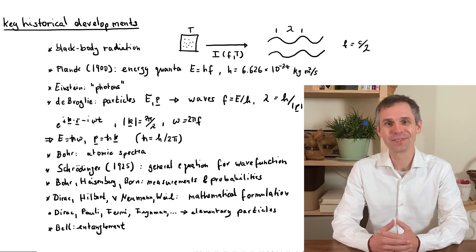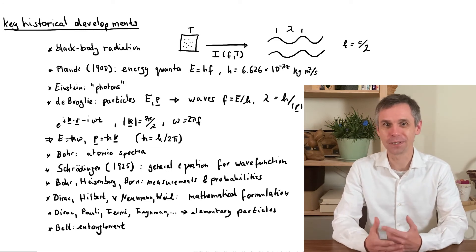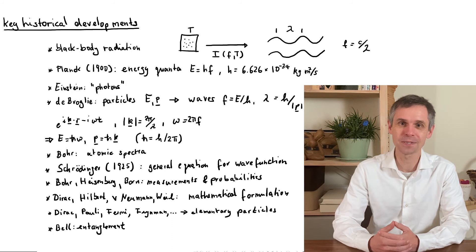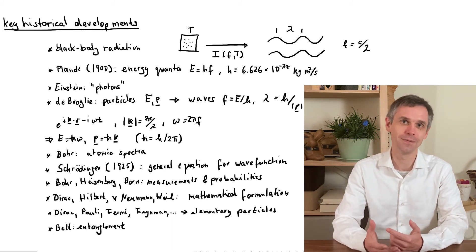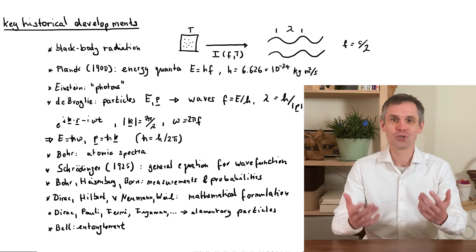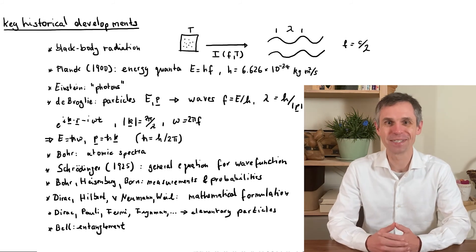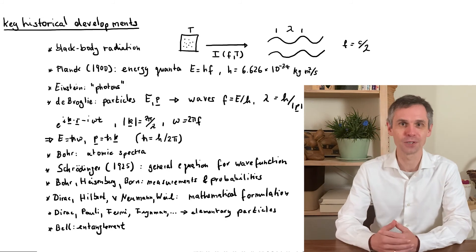We will therefore come back to the specific phenomenon of black body radiation only at the very end of this course, and instead focus on settings involving individual particles, which also reveal much more clearly what is meant by the probabilistic interpretation of the wave function.